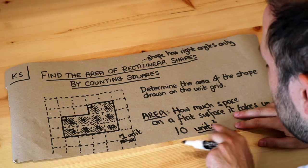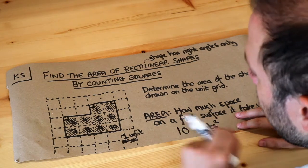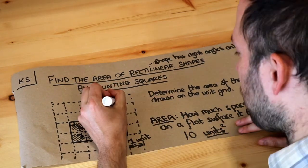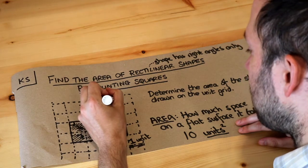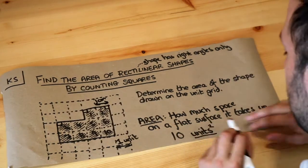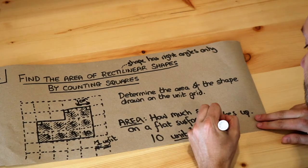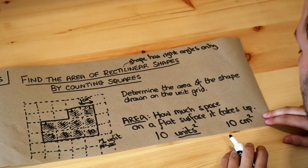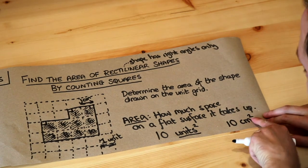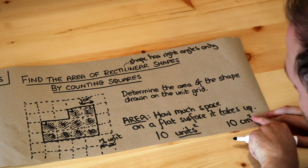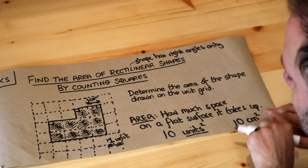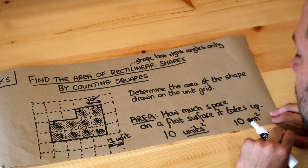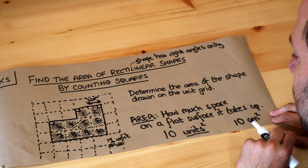Units squared is the unit for area. If you were told, for example, that each square represented 1 centimetre, then the answer would be 10 centimetres squared. When you have a unit for area, you need to put this little 2 — this superscript — to say that it's a unit of area and not of length.